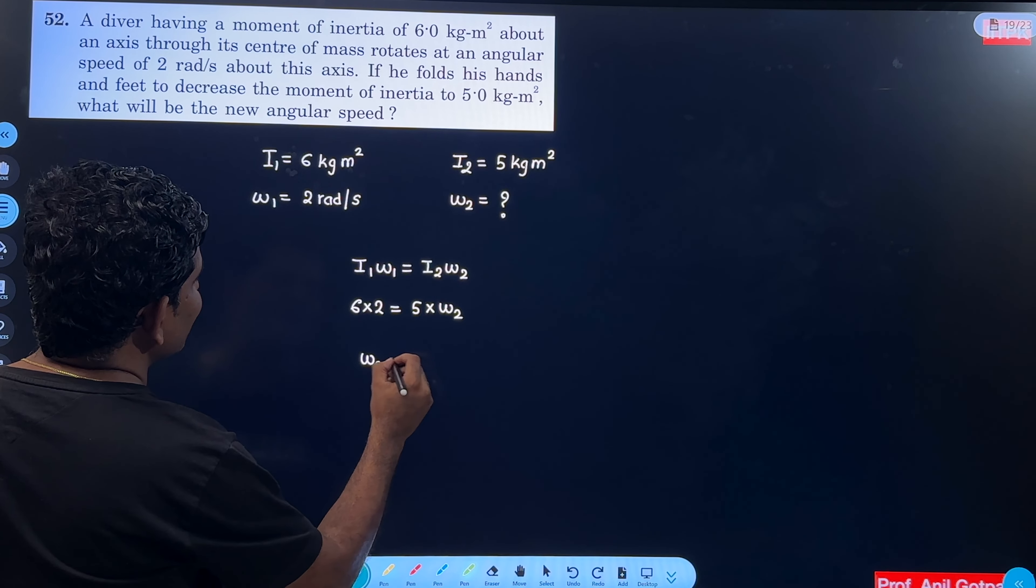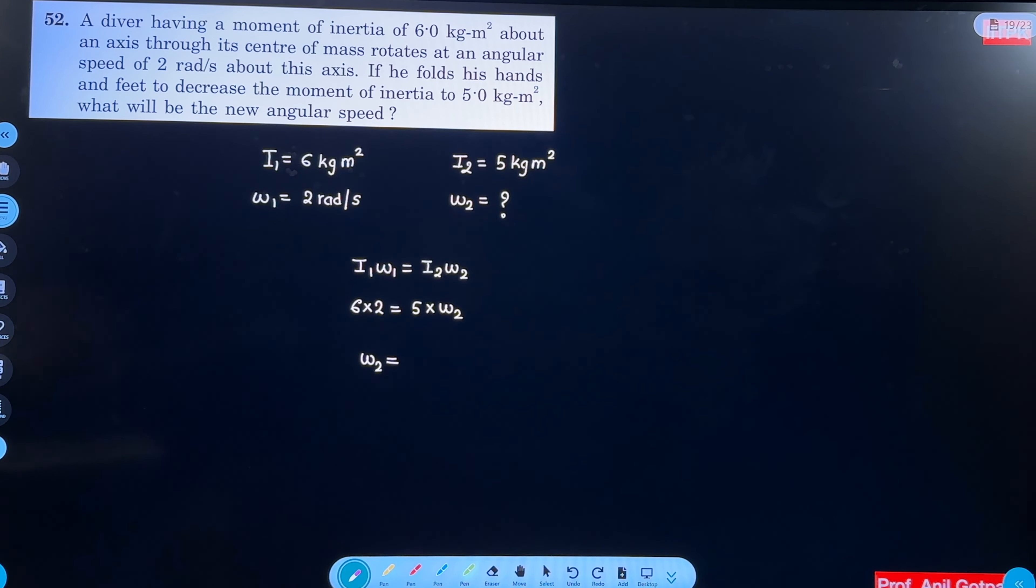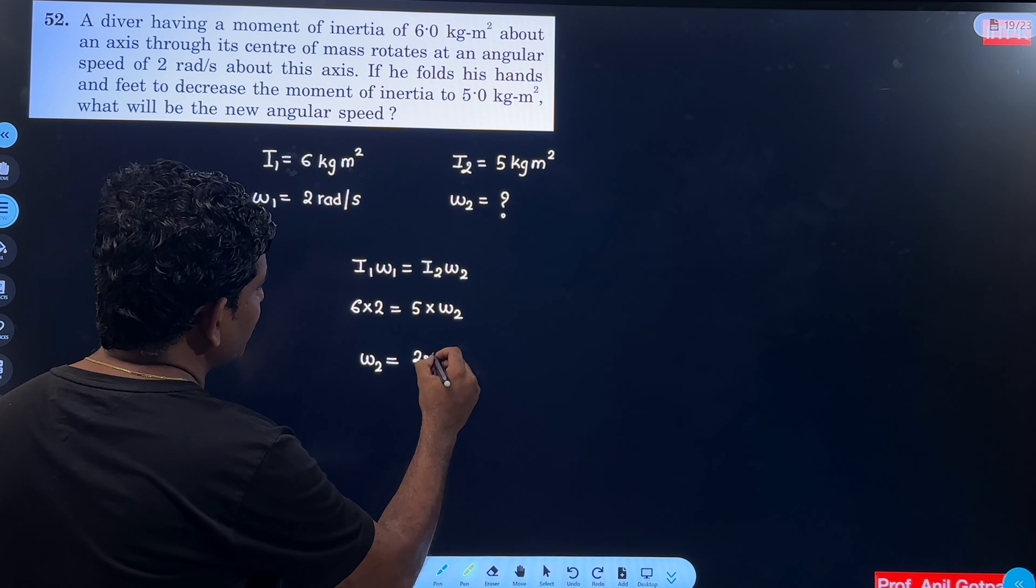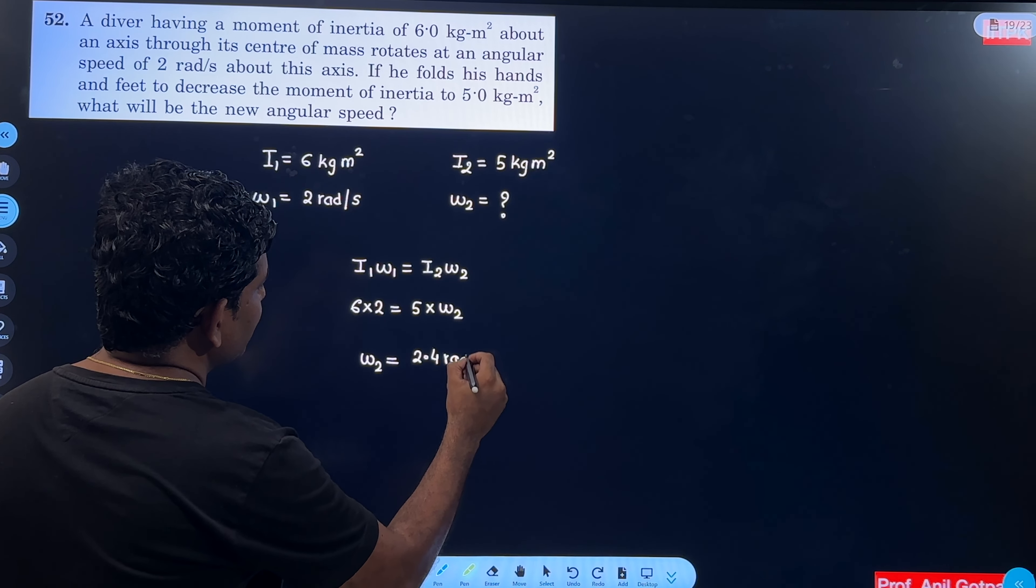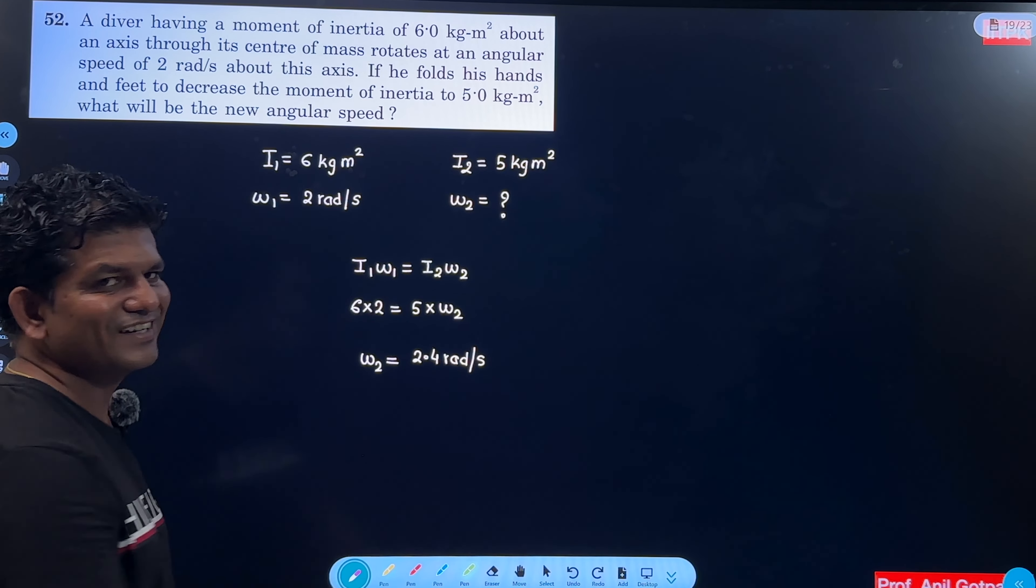Calculation kerlo, humko mil jayega omega 2. 2.4 radian per second. Take them easy.